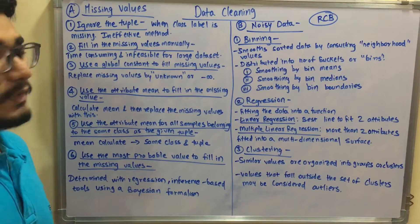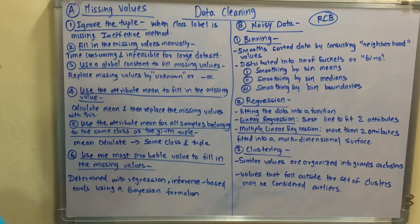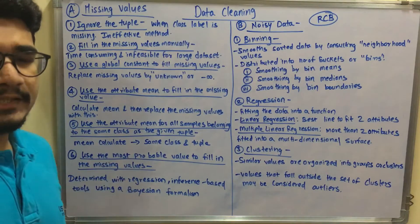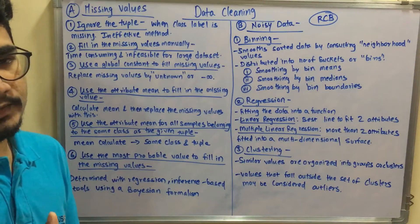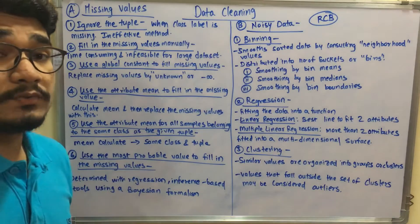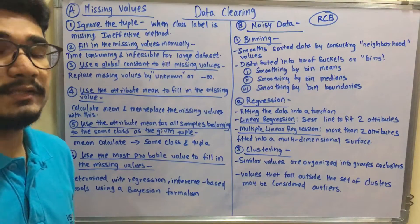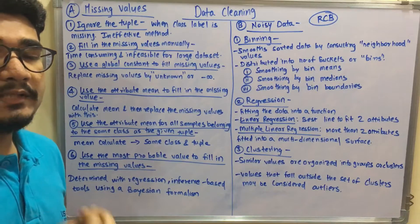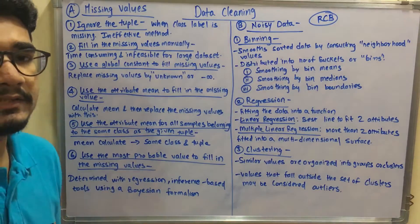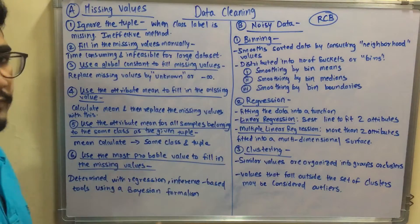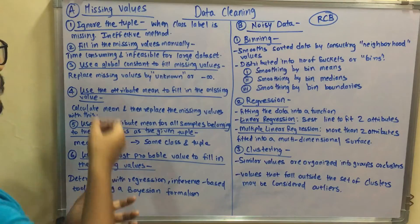Next, we have filling the missing values manually. To some extent we can fill the missing values — if you have 50 or 100 records you can do it. But if you have 1000 or even 1 lakh or more than that in real time, you cannot manually sit and fill those values. So it's a tedious and practically infeasible approach for large datasets, and it's time consuming.